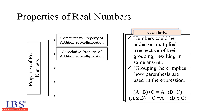Associative property of addition and multiplication: according to this property, numbers could be added or multiplied irrespective of their grouping in an expression, resulting in the same answer. The word grouping here means how parentheses are used in an expression being evaluated. Thus, while adding or multiplying, the place where parentheses are put does not matter. That is, (a + b) + c = a + (b + c), and (a × b) × c = a × (b × c).